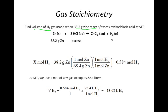All right, so the question states, find volume of hydrogen gas made when 38.2 grams of zinc reacts with excess hydrochloric acid at standard conditions.